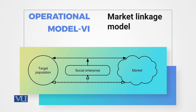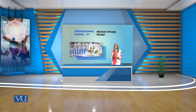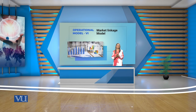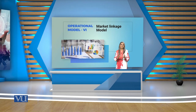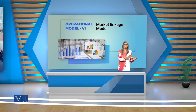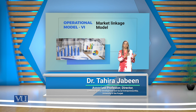Social enterprise is in the middle, and its linkages are on both sides — market and target population. This explains the name 'linkages.' Basically, the market linkages model establishes trade relationships in the target population, which are small producers, farmers, and local traders.